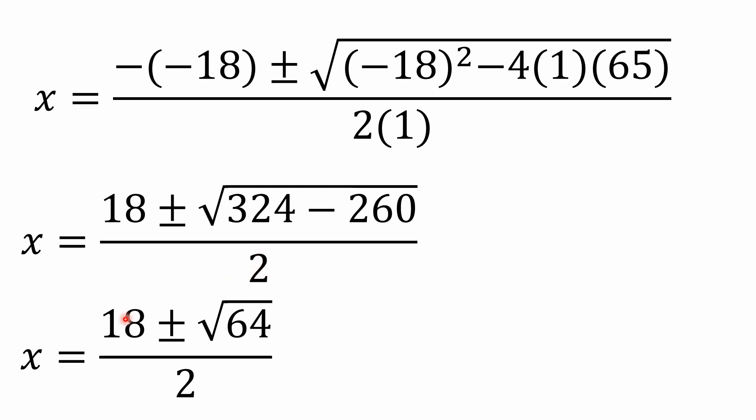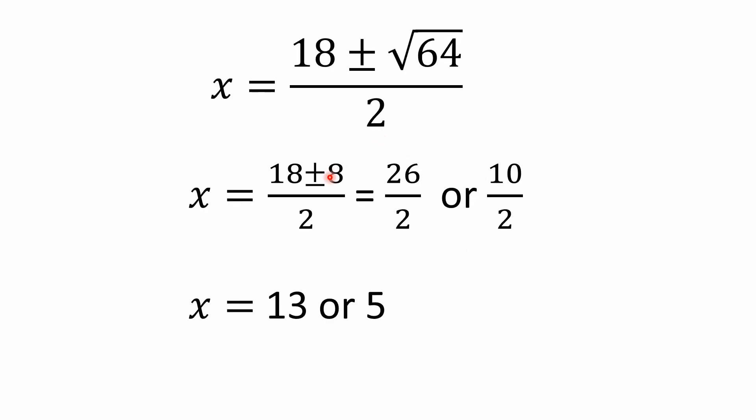I simplify that down further. It's 18 plus or minus the square root of 64, all divided by 2. And what does that come out to be? Well, that comes out to, you've got 18 plus or minus 8 all over 2. So your answer is either 26 over 2, because 18 plus 8 is 26. 18 minus 8 is 10. So you've got 26 over 2 or 10 over 2. Simplify that further. What's 26 over 2? 26 halves is 13. 10 divided by 2 or 10 halves is the same as 5. So that means our answer is either 13 or 5.